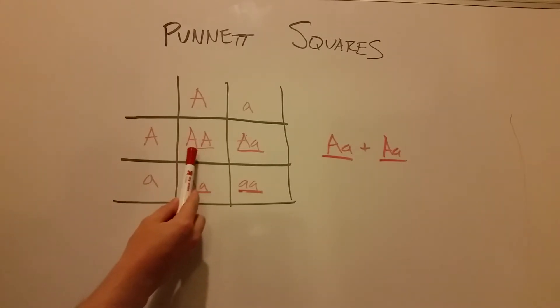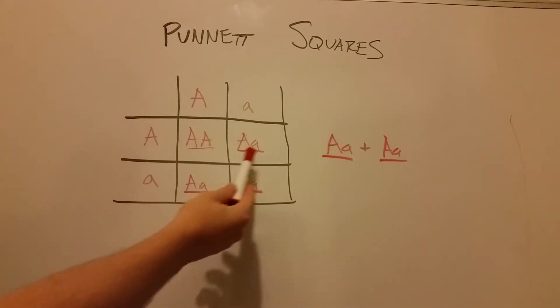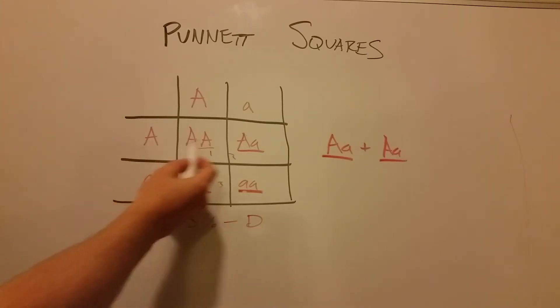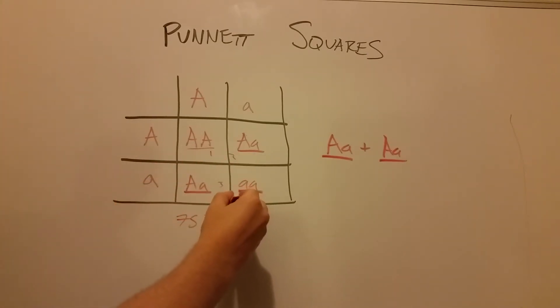You actually have three, one, two, three, three of these four outcomes are all dominant, and only one is recessive phenotype showing. Meaning that you have a 75% chance, because one, two, three out of four, that you'll have the dominant phenotype showing because you have big A, big A, big A. You have a 25% chance that the phenotype will be recessive.